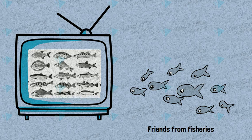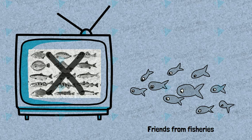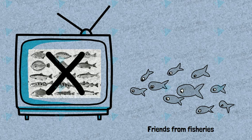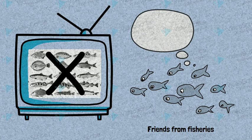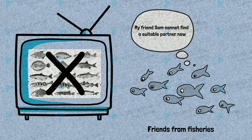Fisheries are also responsible for losses in biodiversity. Most of the grown fish cannot be fully maintained on vegetarian feed. Therefore, so-called low-value fish are used to feed them. This creates extreme disbalance in fish populations and species richness, pushing more fish species to be endangered. My friend Sam cannot find a suitable partner now.